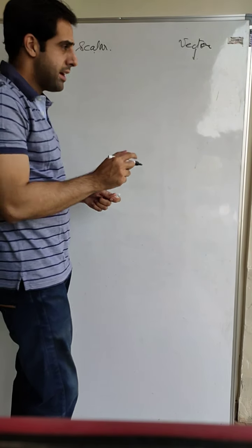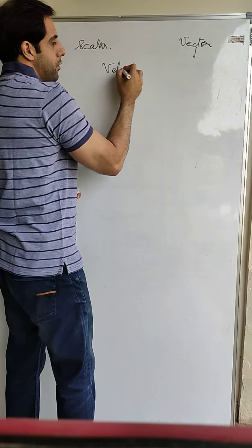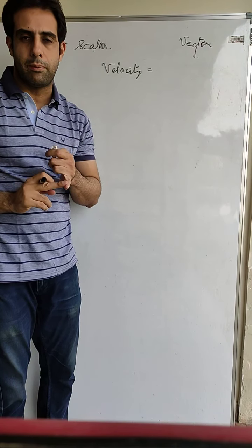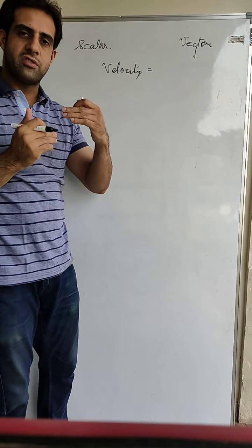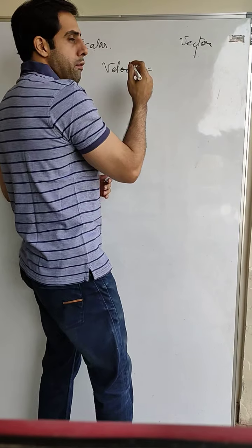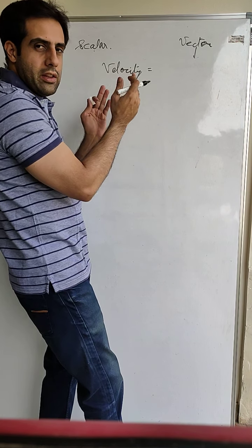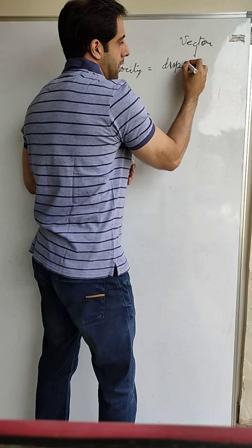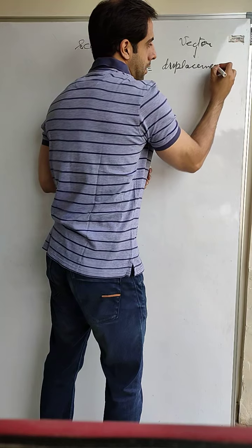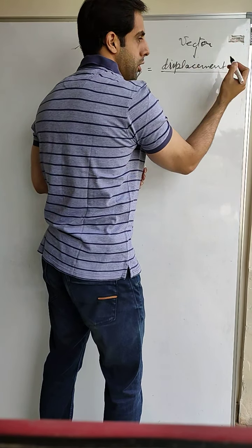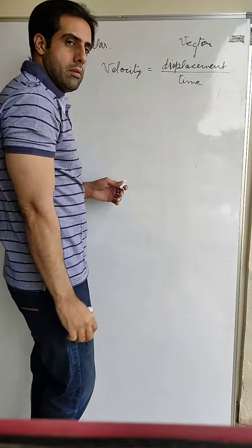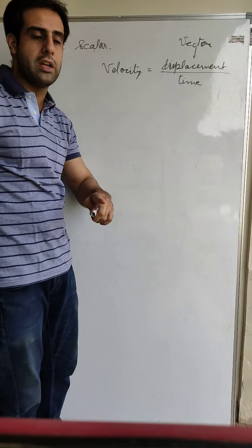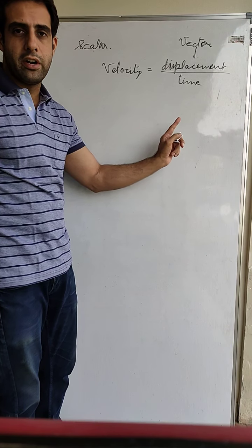So what is the formula for velocity? The formula for speed is distance divided by time. Taking the corresponding vector quantities: if distance is a scalar quantity, its corresponding vector quantity is displacement. So velocity equals displacement divided by time, while speed equals distance divided by time.